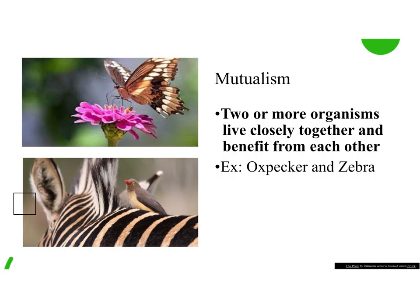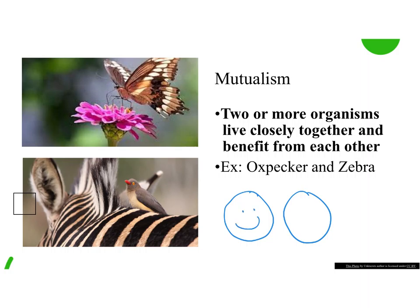Our first symbiotic relationship is mutualism. This is when both organisms live in close proximity to each other and they both benefit from the other one — everyone benefits. An example is the oxpecker and the zebra. The oxpecker eats pests or fleas off the zebra, so it benefits by getting easy food without exerting a lot of energy. The zebra also benefits because it gets its own personal pest control. So mutualism is when both species benefit — draw two smiley faces in your notes.